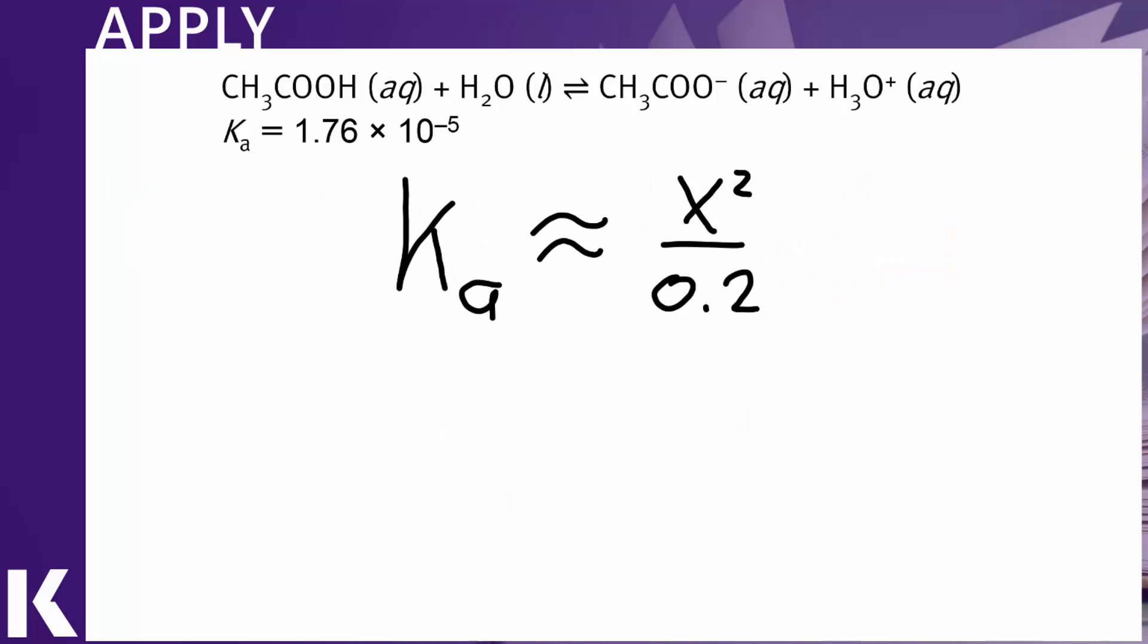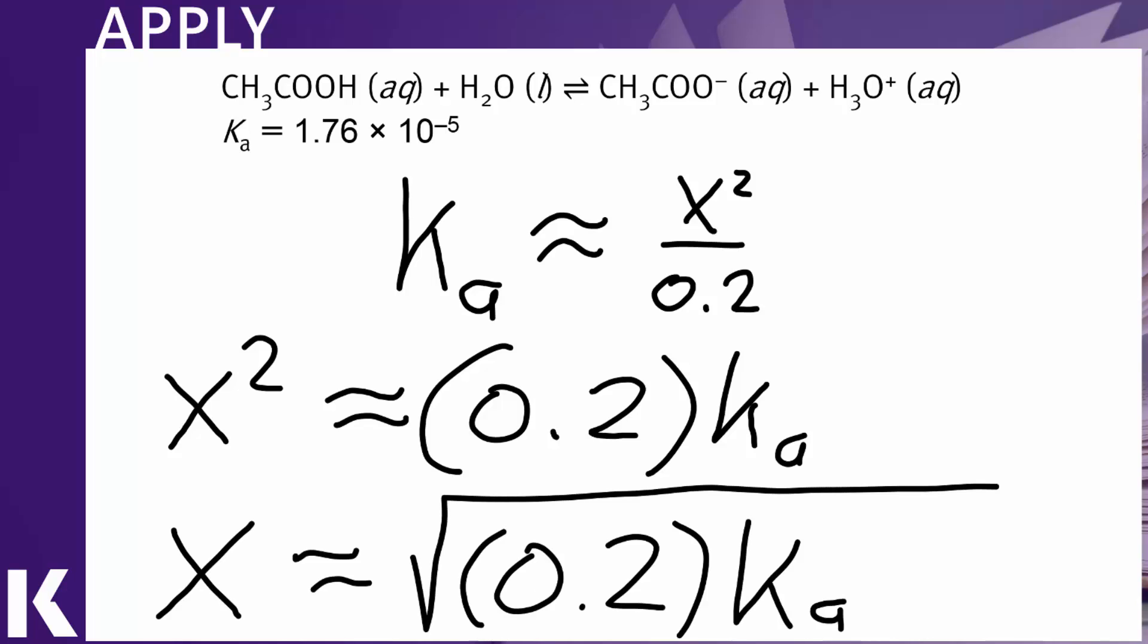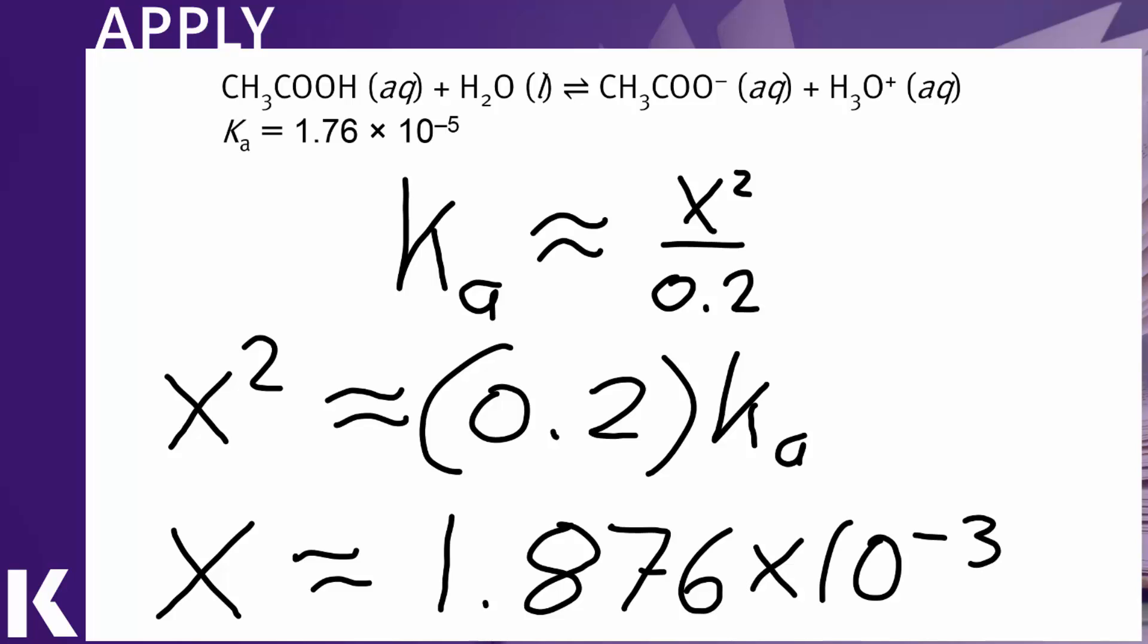Now, doing the algebra on the simplification then, rearrange, and we end up taking the square root. And if we do that, we find that X is 1.876 times 10 to the minus third.